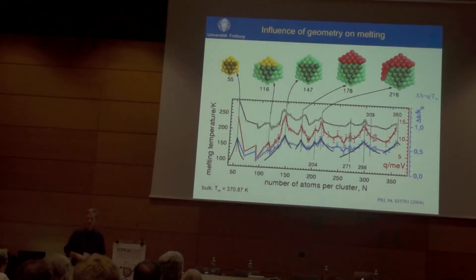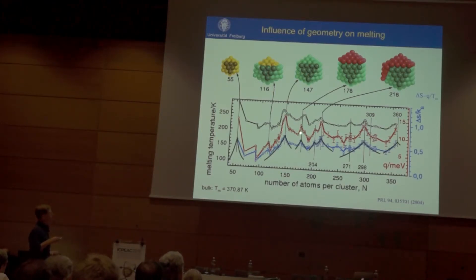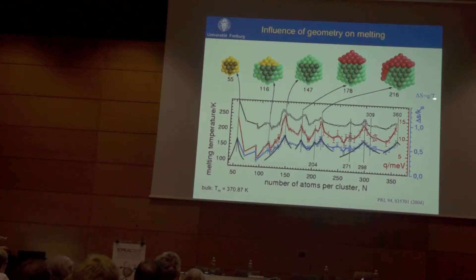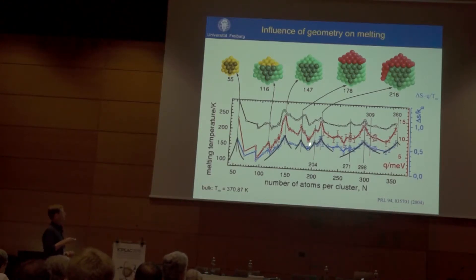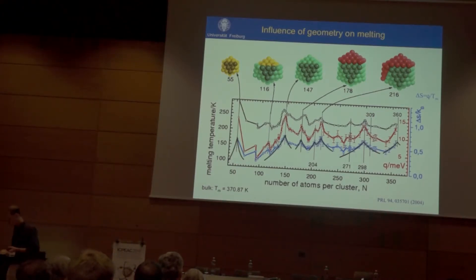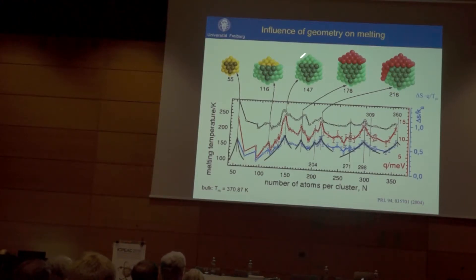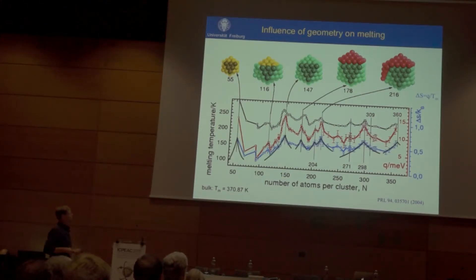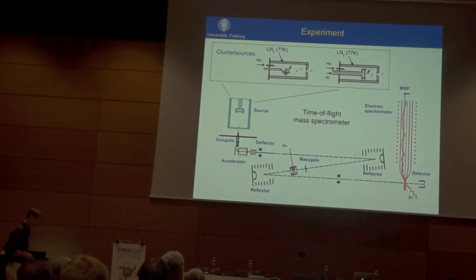We did this for many sizes and can see both the melting point and the latent heat of melting show a very strong size dependence. From these two values we can also calculate the entropy of melting by taking the ratio. The latent heat and entropy show pronounced maxima, which we can relate to cluster structure: from independent photoelectron spectroscopy we found that whenever a cluster has a very nice symmetric structure, it is very hard to melt — it needs a lot of energy and the entropy gain upon melting is very high. Now we wanted to see how it is with water clusters.